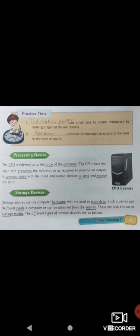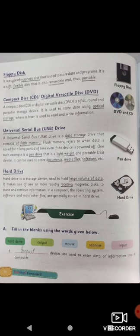Storage devices are the computer hardware used to store data. Such a device can be found inside a computer or can be attached from the outside. These are also known as storage media. Different types of storage devices include both internal and external types — we will understand the terms for those devices.